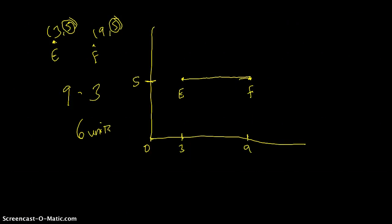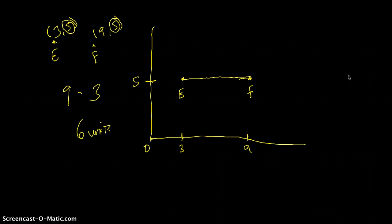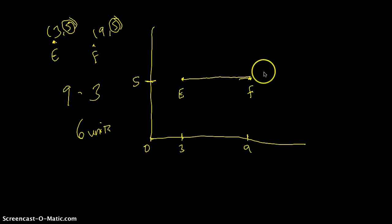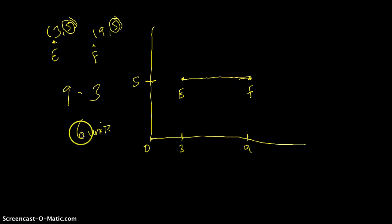That was a quick review of how to find the length of a line segment given just the coordinates. Look to see if your line segment crosses from one quadrant into another — if it passes the x- or y-axis, it does, and when that happens you add the absolute values. If you do not pass from one quadrant to another, subtract the smaller coordinate from the greater one. In this case, 9 take away 3 gave us 6 units.